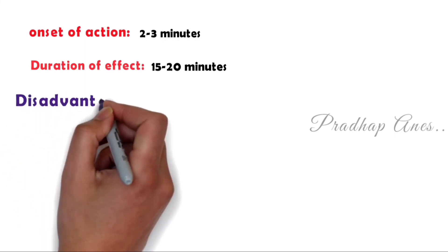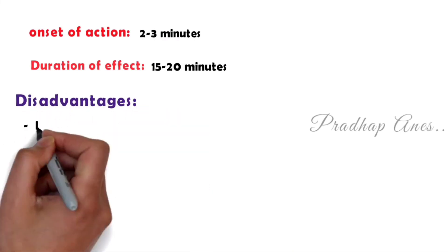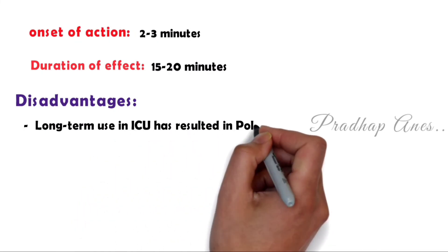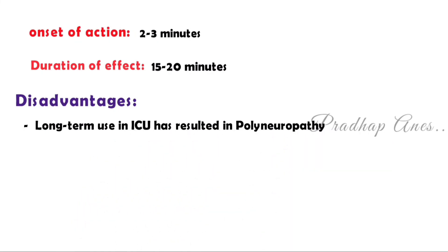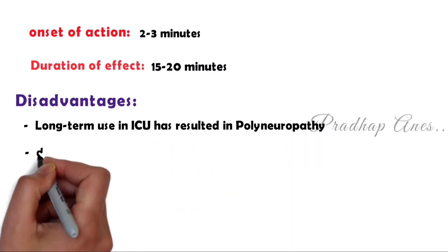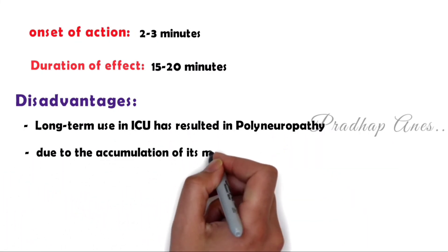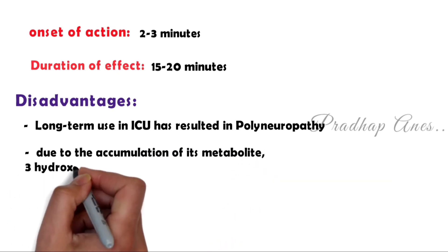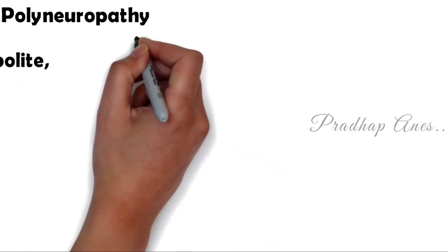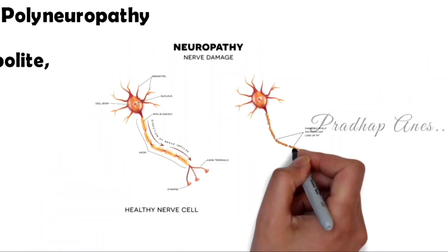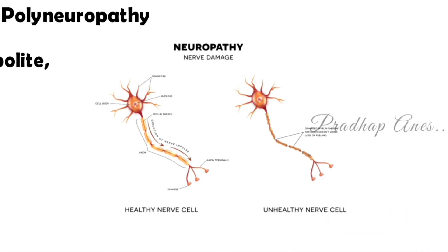Disadvantages: Long-term use in the ICU has resulted in polyneuropathy. This polyneuropathy is due to the accumulation of its metabolite, the 3-hydroxy metabolite. Polyneuropathy refers to damage or disease affecting the peripheral nerves.